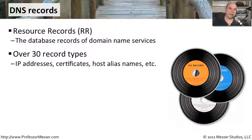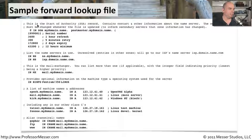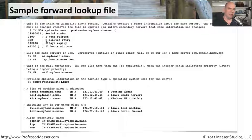If we look at an individual forward lookup configuration file for a DNS server, you can see there's a lot of detail in here. Some of this that starts with a semicolon is a comment, so we don't have to worry too much about those. Everything that is bold is a resource record of some kind, whether it is a name server resource record, an MX record, or an A record.